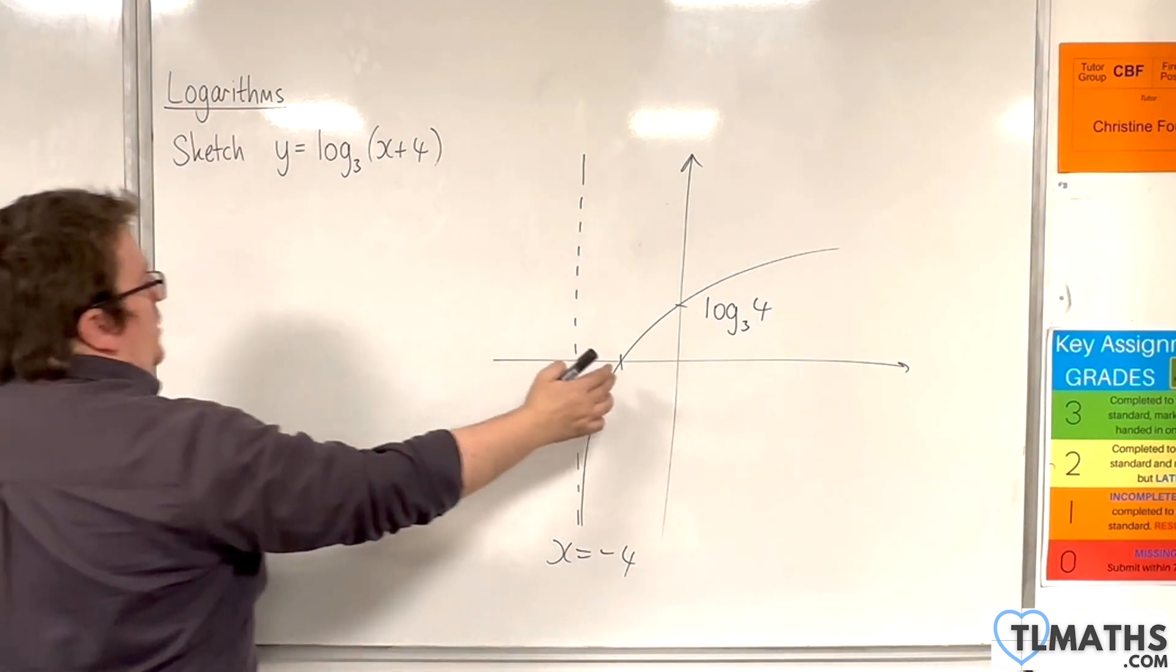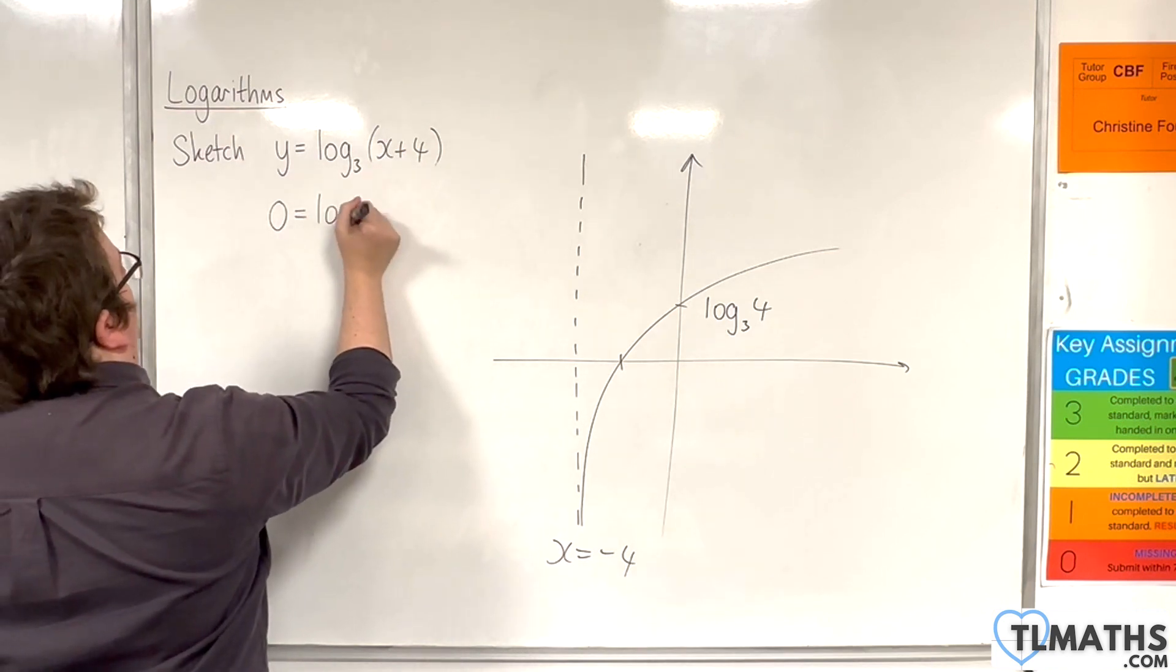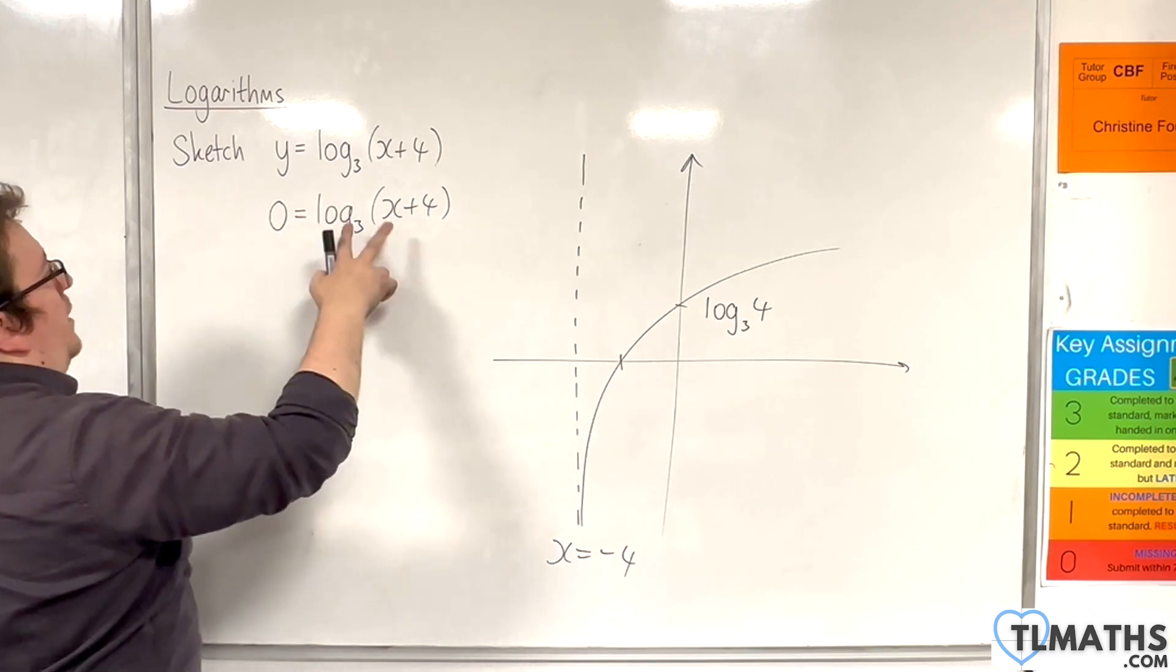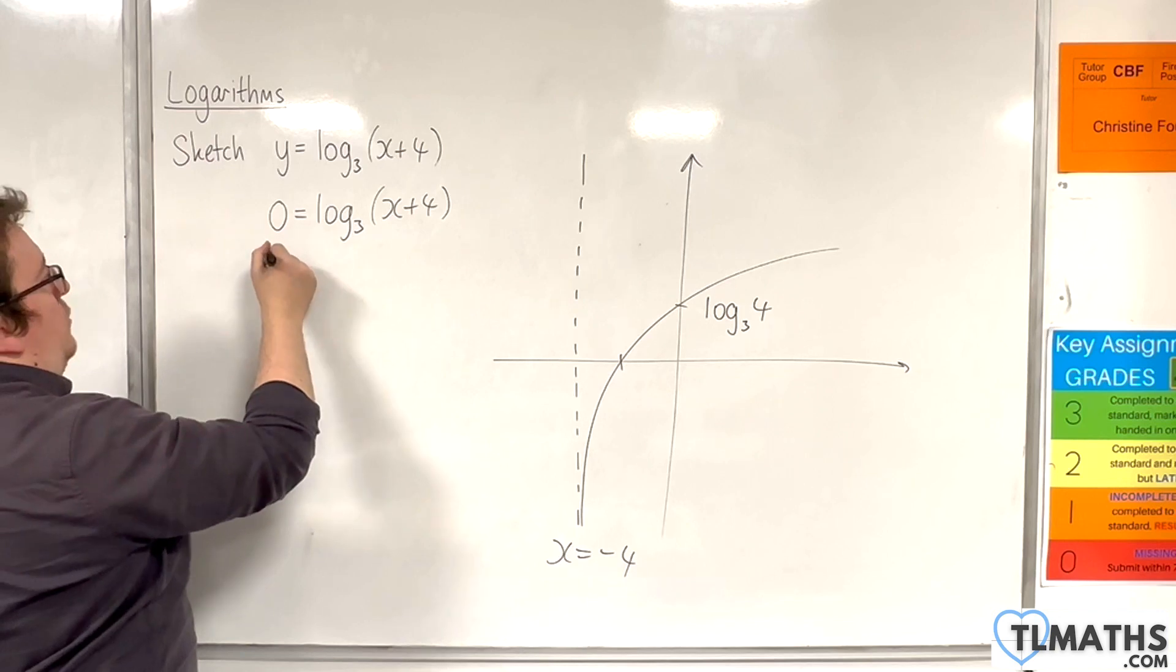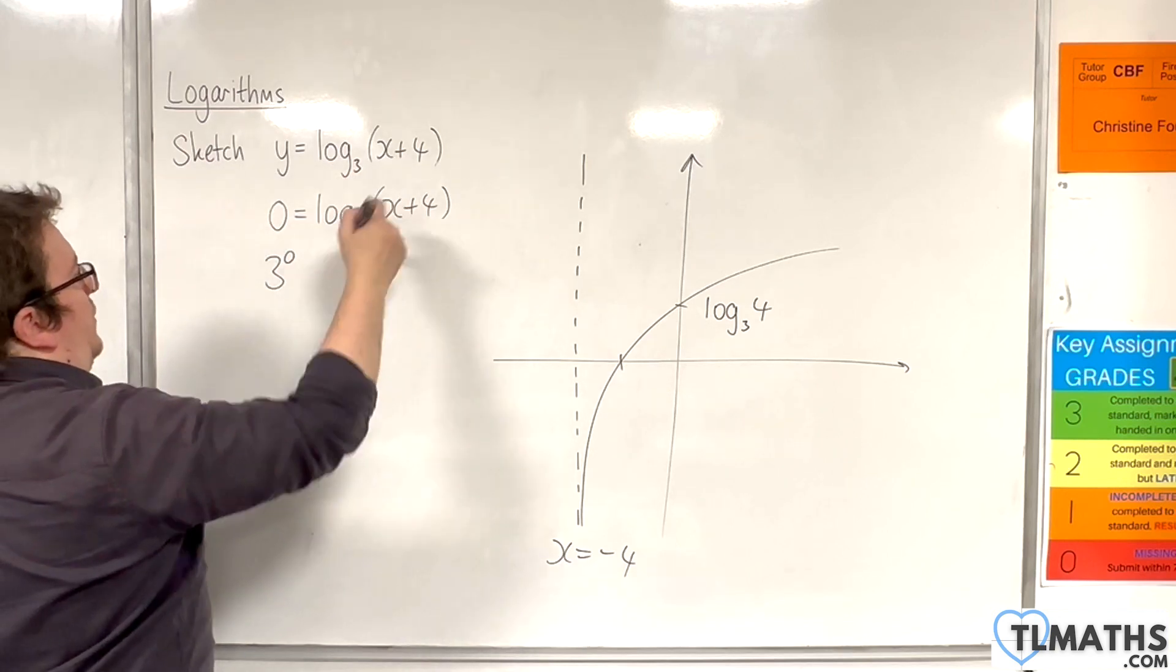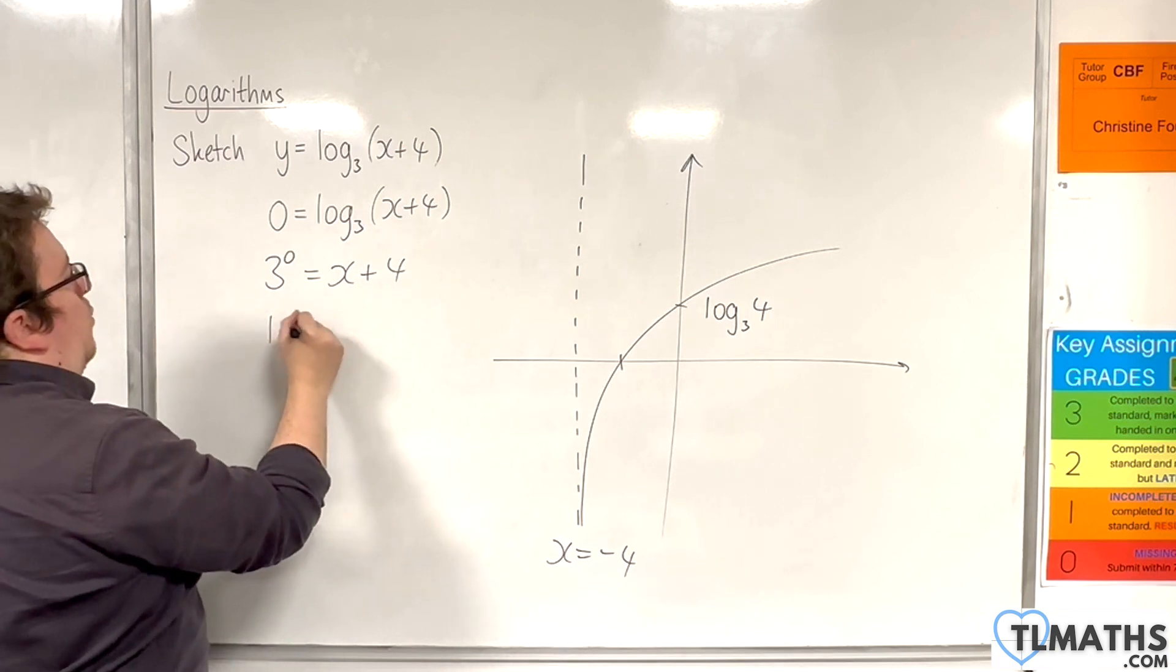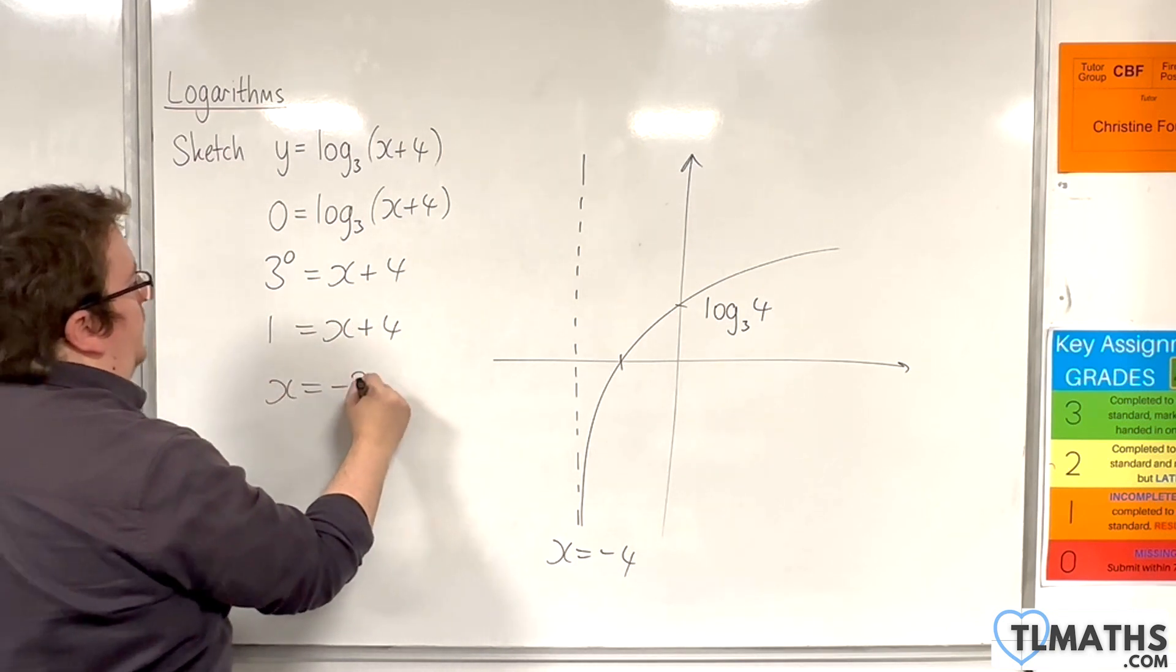When y is 0, to work out where it crosses the x-axis, 0 is log base 3 of x plus 4. Going from logarithmic to exponential form, we did this in the previous video, so 3 to the power of 0 is equal to x plus 4. So 1 is equal to x plus 4, so x has to be minus 3.